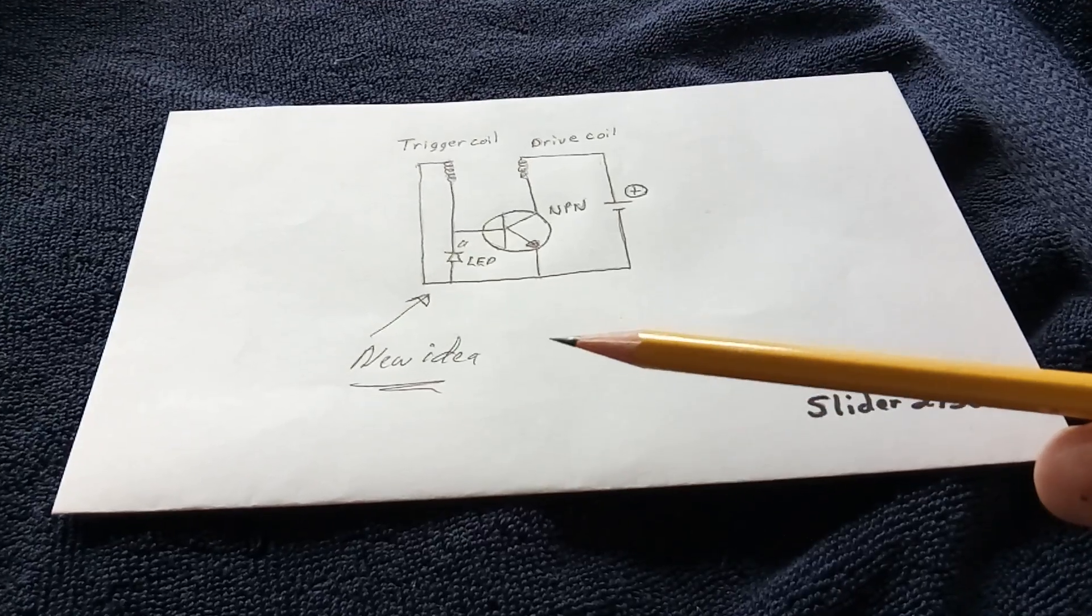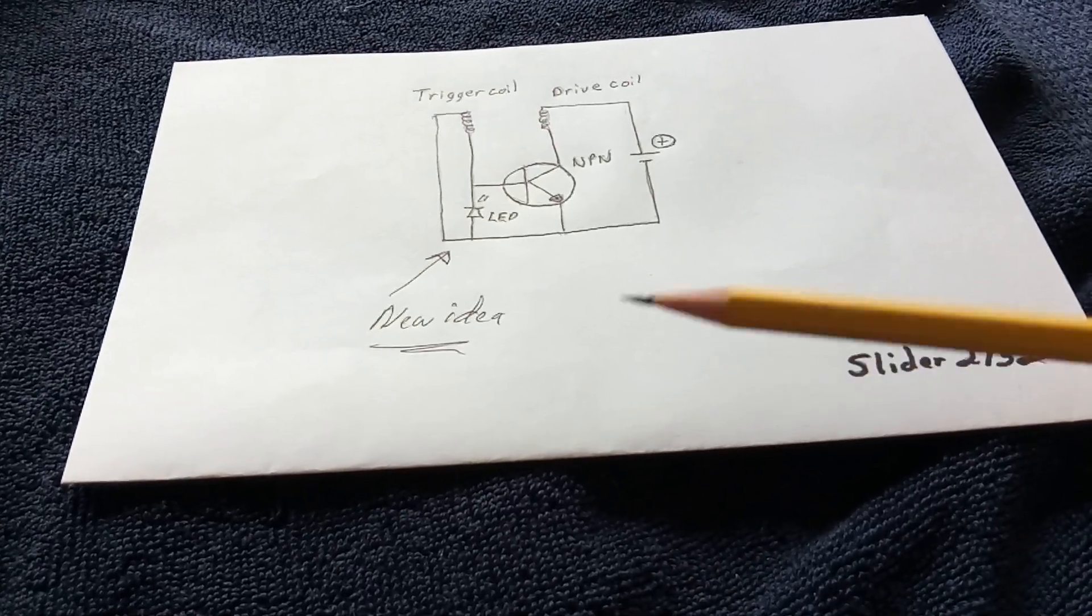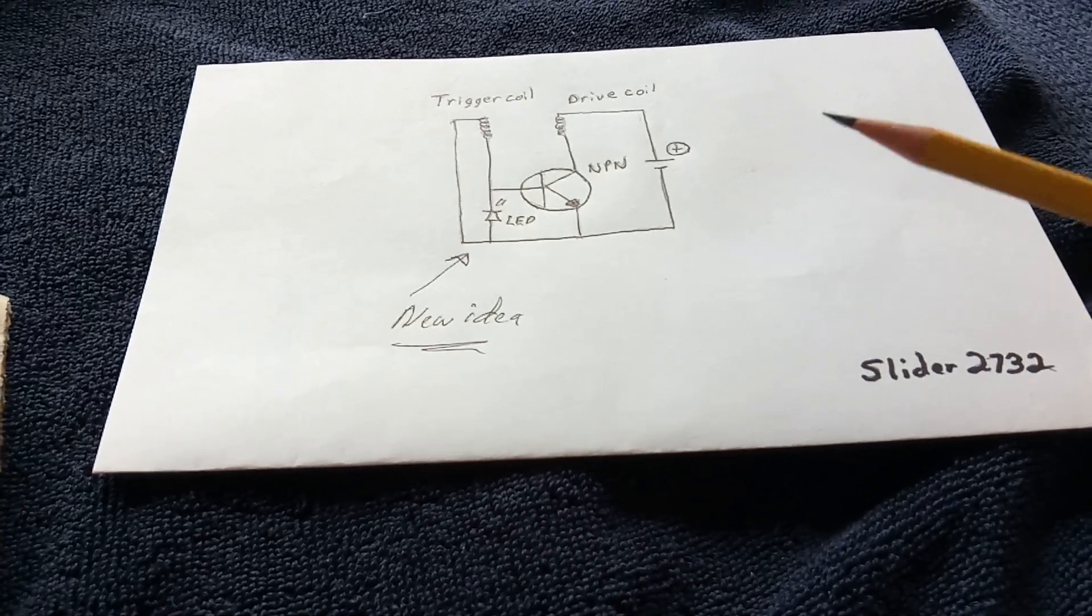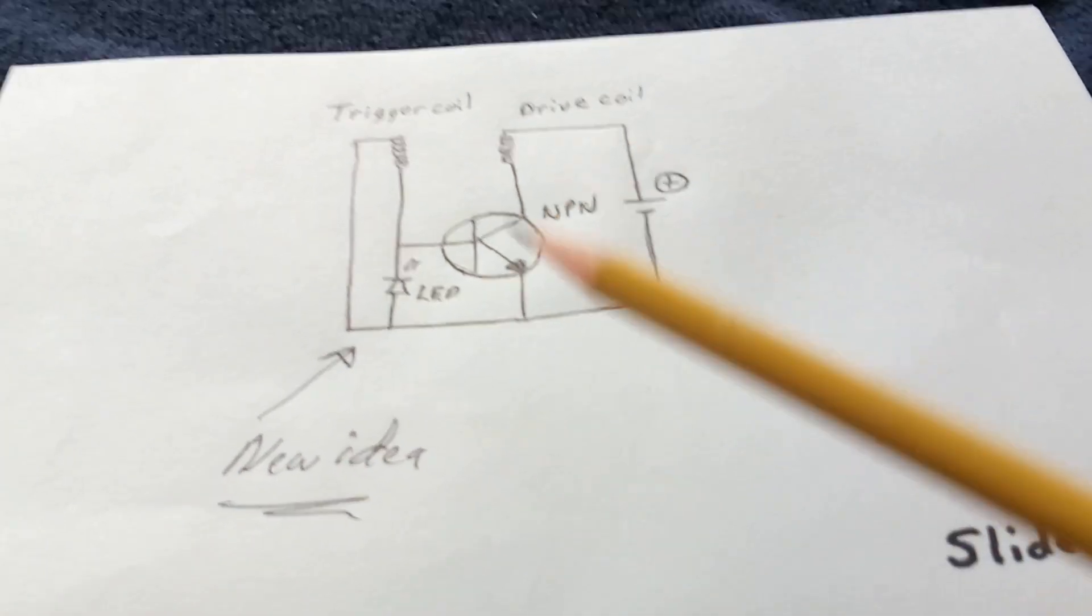And he wired up the coils in such a way and used a Bedini SSG circuit on it and it ran great. And then he just started pulling parts off the circuit, and he found out it would run with less and less parts until he got down to just this.